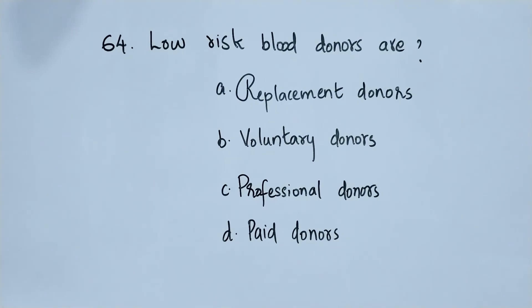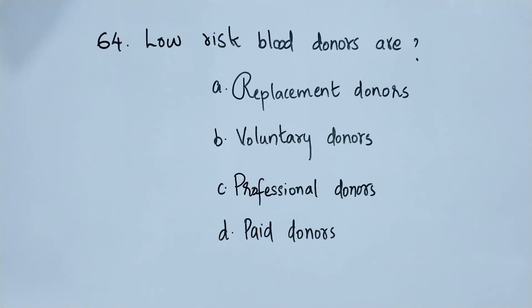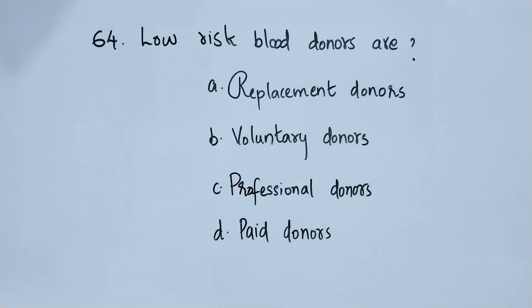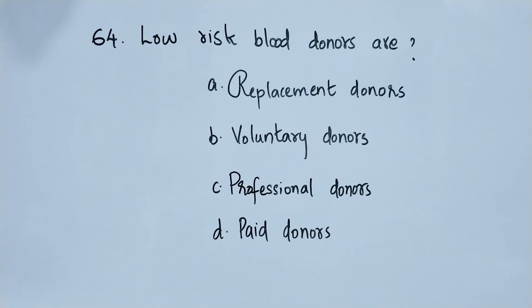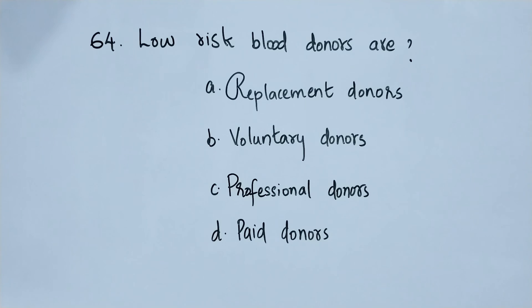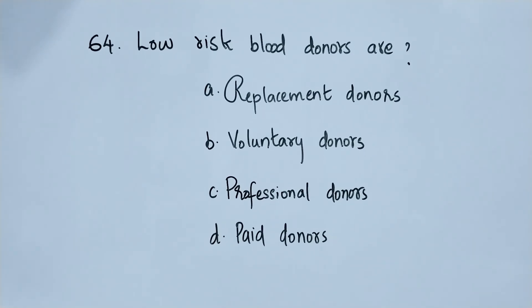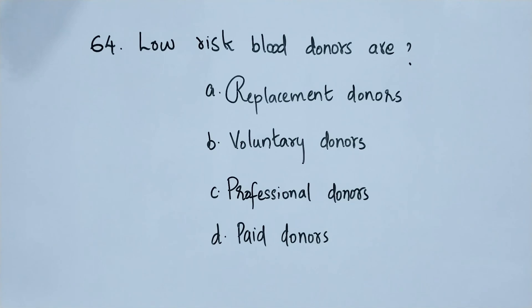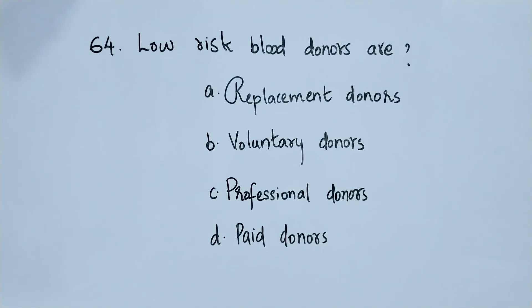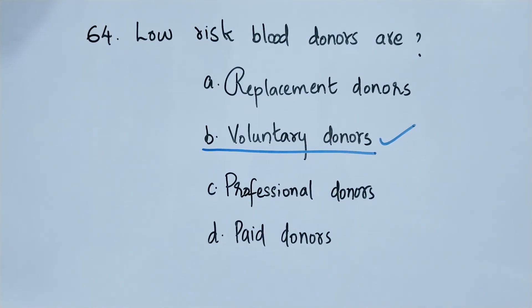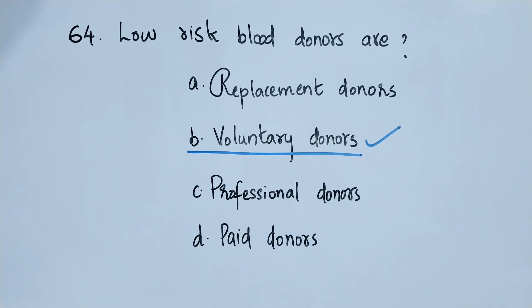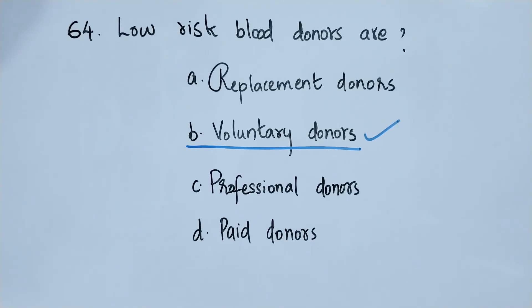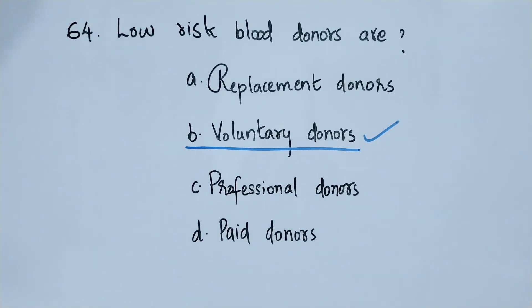Question number 64. Low risk blood donors are: option A replacement donors, option B voluntary donors, option C professional donors, option D paid donors. The right answer is option B, voluntary donors. The low risk blood donors are voluntary donors.